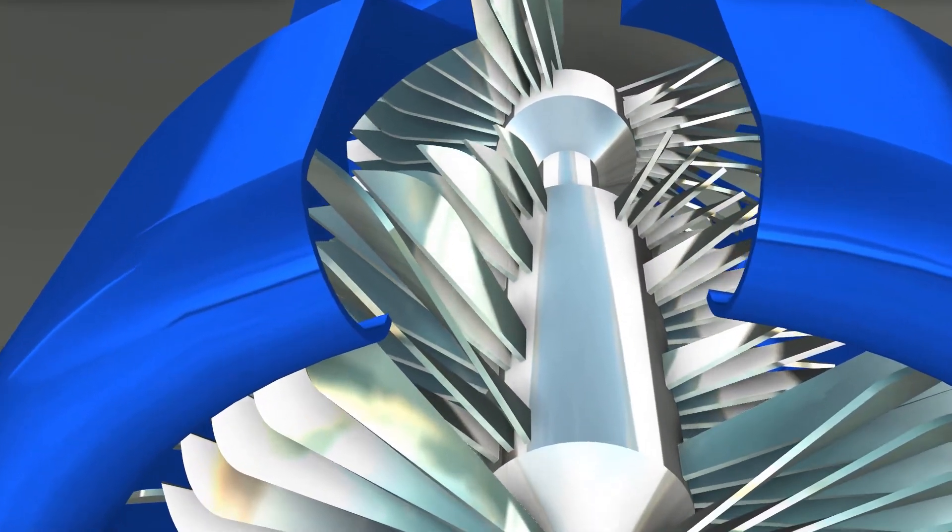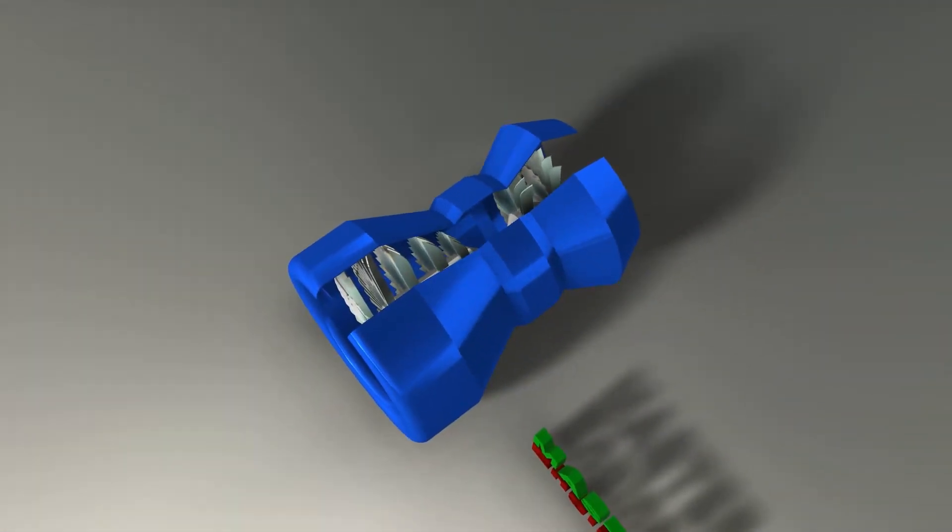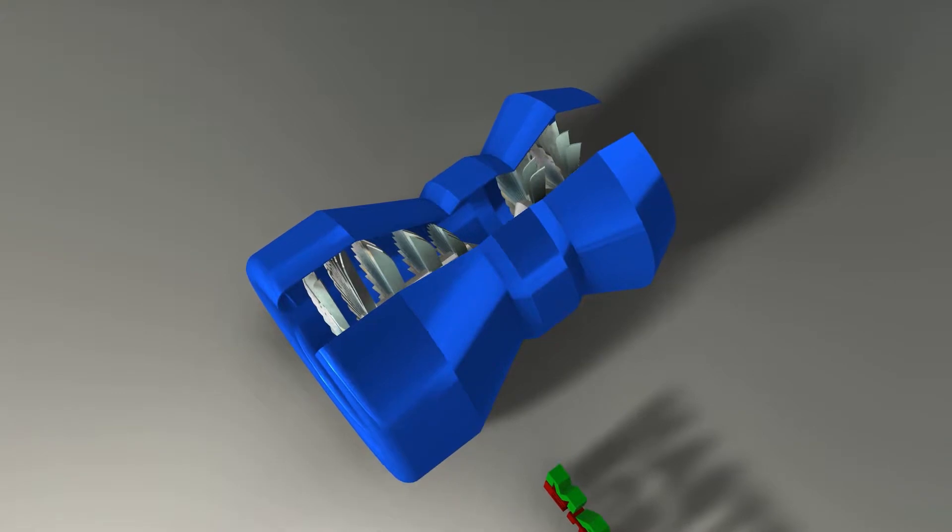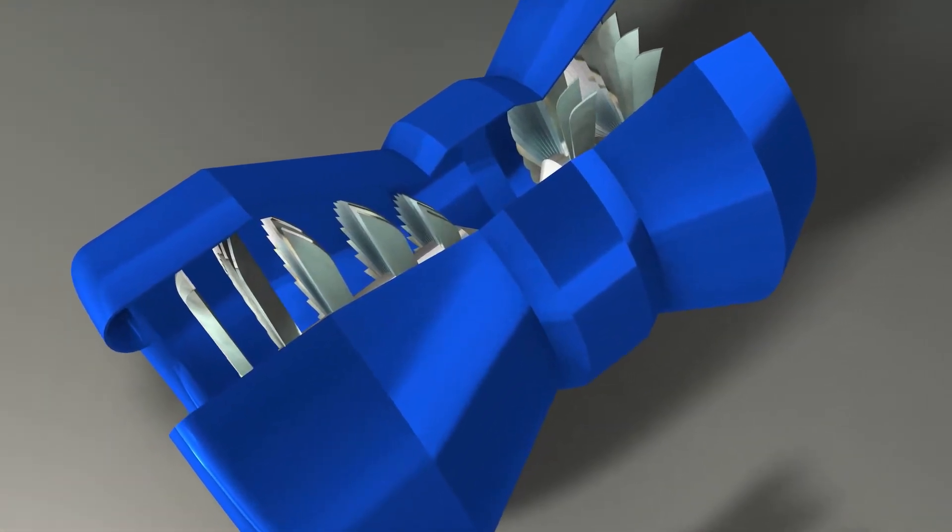The burning fuel adds energy to the exhaust stream by heating and expanding the air. Sufficient energy to drive the compressor is extracted from the exhaust stream by the turbine.